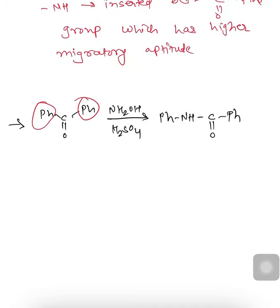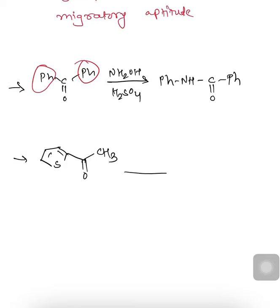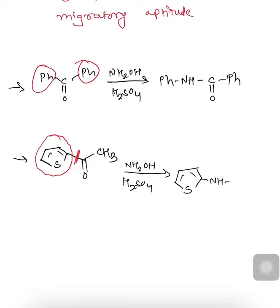For another example: a five-membered thiophene ring attached to a carbonyl with CH3. If we carry out the Beckmann reaction in presence of NH2OH and H2SO4, the thiophene group has higher migratory aptitude. So NH is inserted between the carbonyl group and the thiophene, giving the product: thiophene-NH-C(=O)-CH3.